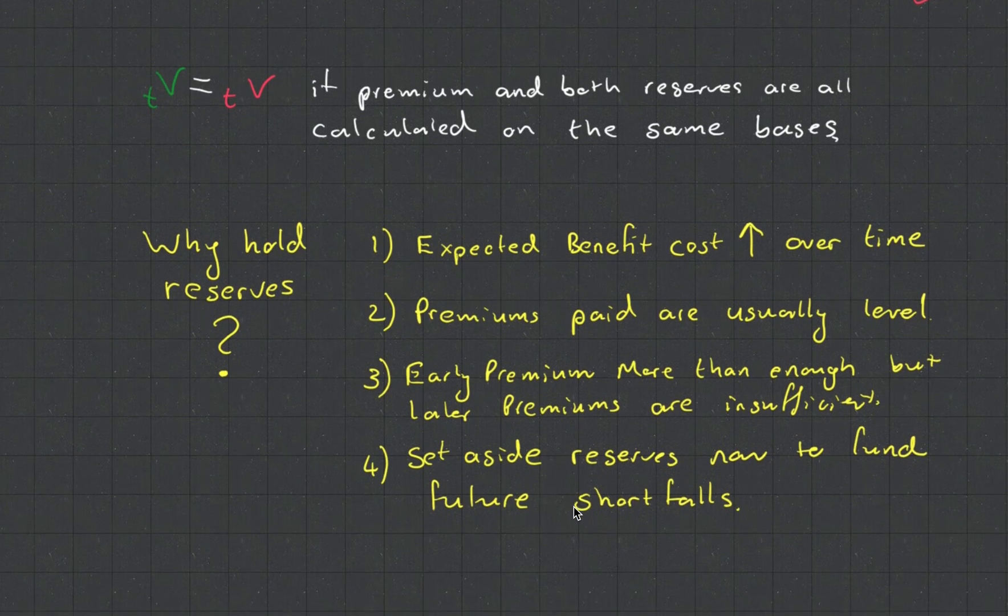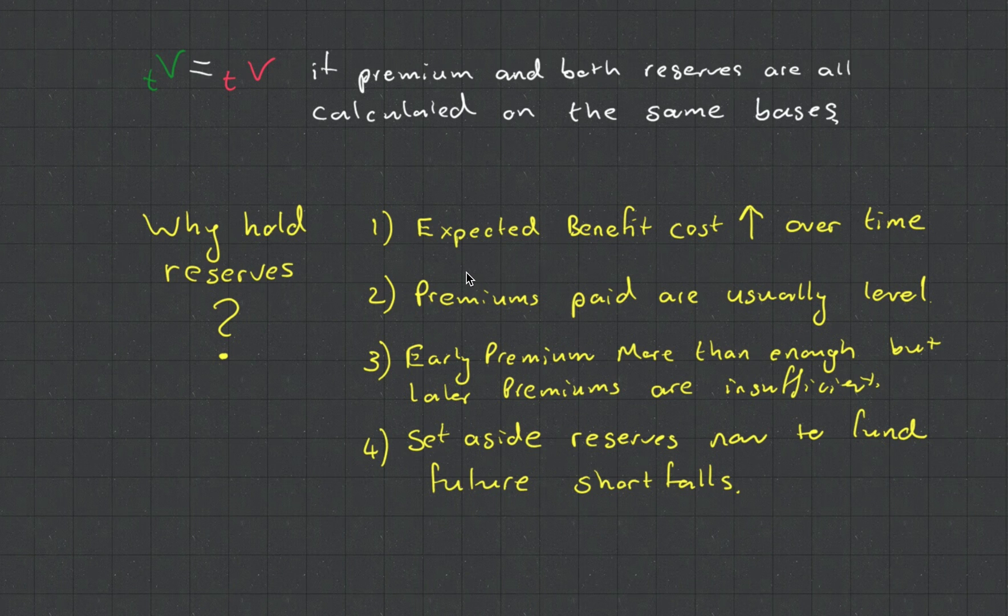Why do we hold reserves? With the blue line increasing, expected benefit costs increase over time because your chance of dying increases. Premiums paid are usually level. However, in practice, premiums in real life will have escalations and increase due to inflation to try to match the benefit. Essentially, when you start an insurance contract, early premiums are more than enough, but later premiums are insufficient. That's why you need to set aside reserves now to fund the future shortfall.